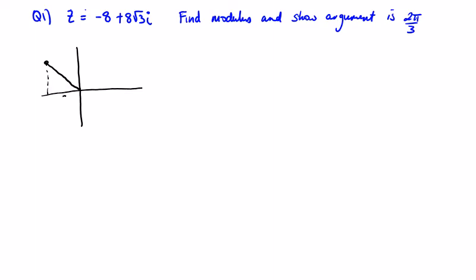We're going back a distance of eight and we're going up eight root three. So the modulus r is the square root of eight squared plus eight root three squared. Just type that into your calculator, you'll come up with an answer of 16.